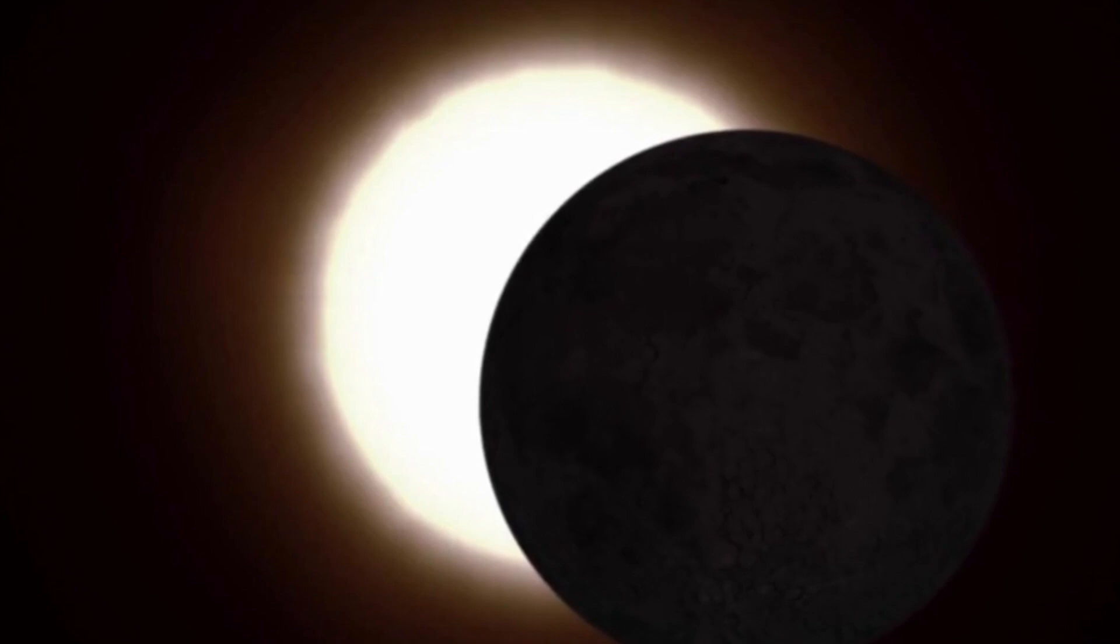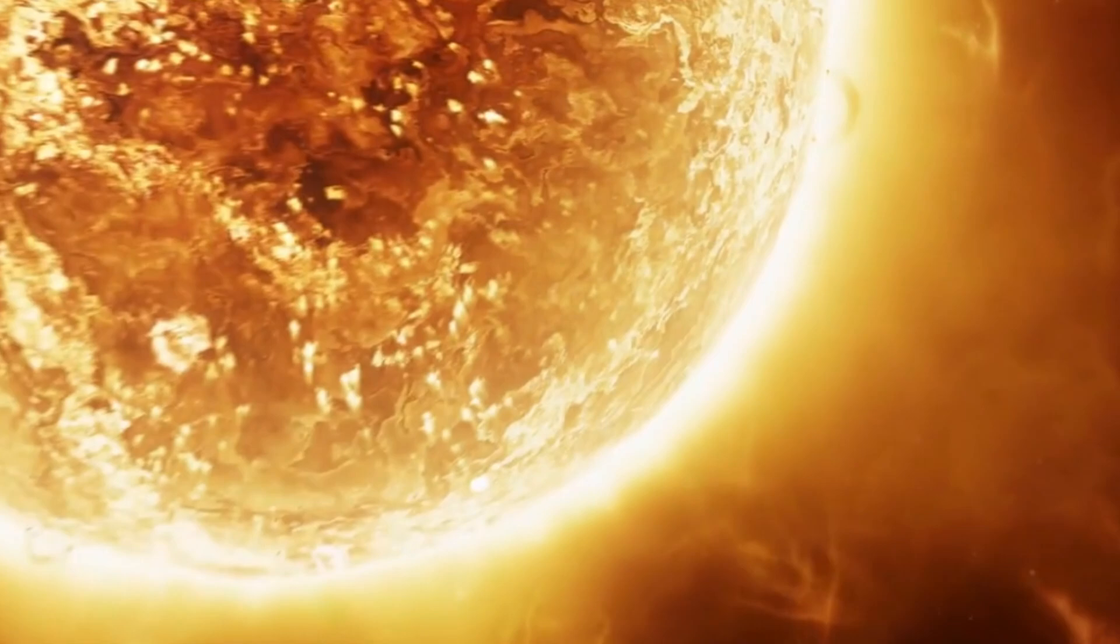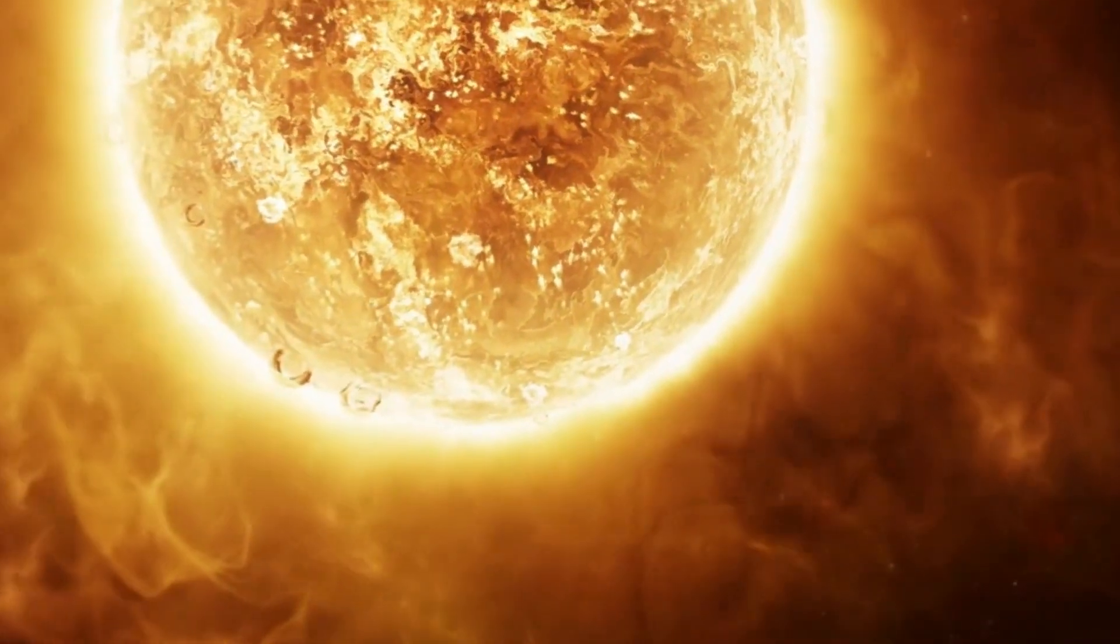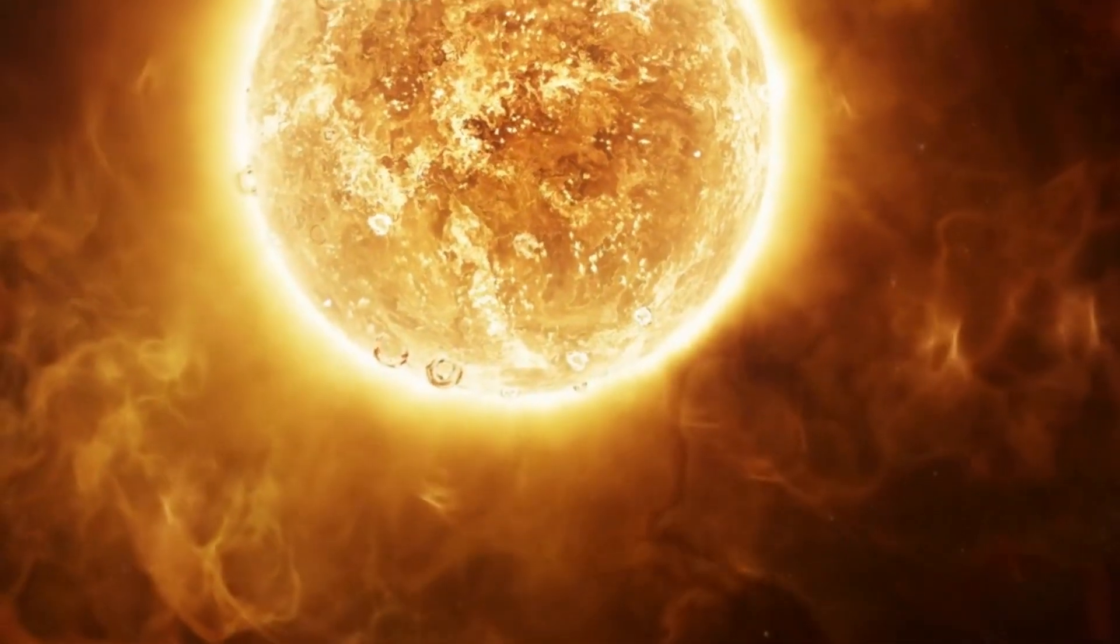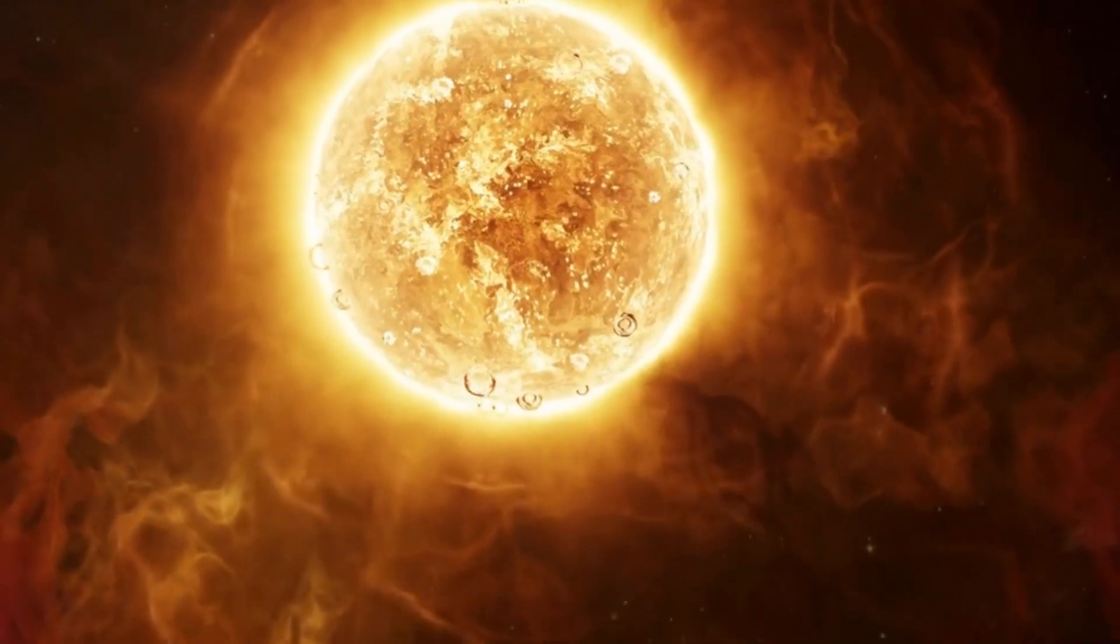Annular Solar Eclipse. During an annular solar eclipse, the moon passes directly in front of the sun, but does not completely cover it. This creates a dazzling ring of light around the darkened silhouette of the moon, known as the ring of fire.